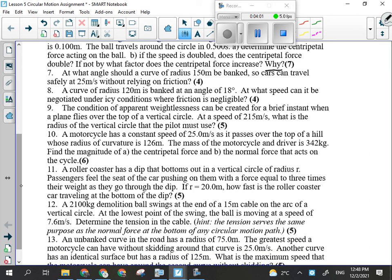Number nine is a vertical circular motion question. We've got apparent weightlessness being created for a brief instant when the plane flies over the top of a vertical circle. We know the speed. We're looking for the radius of the circle.